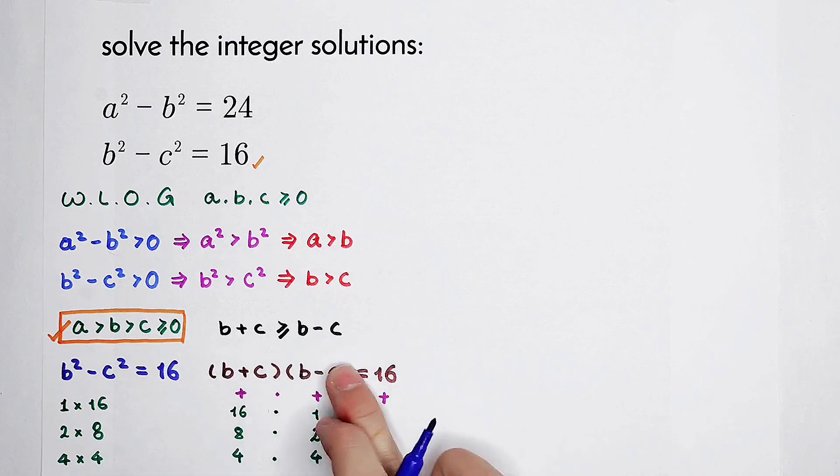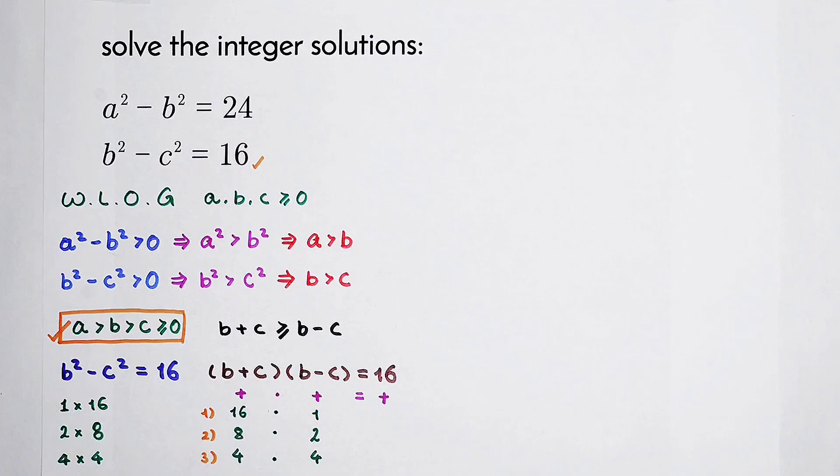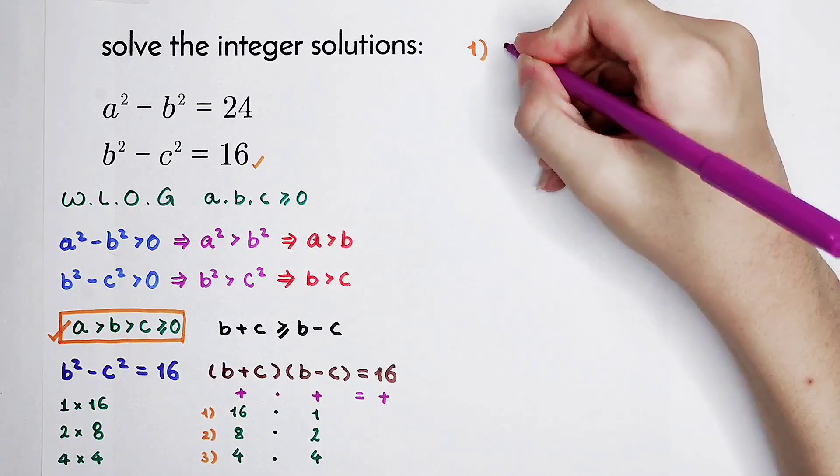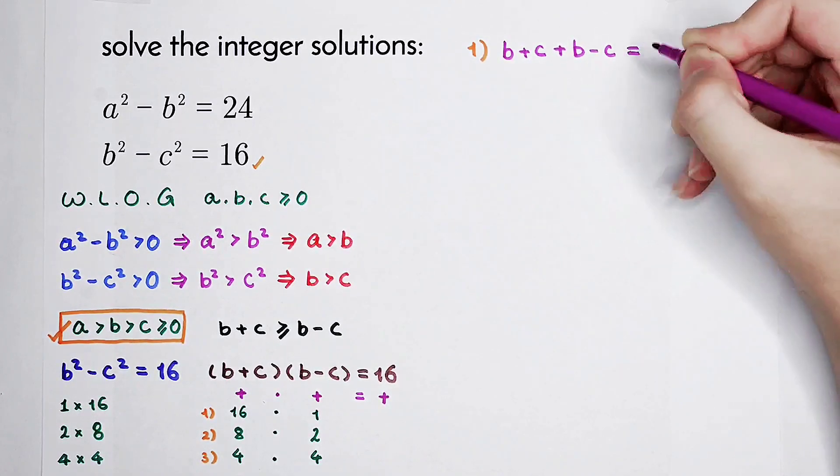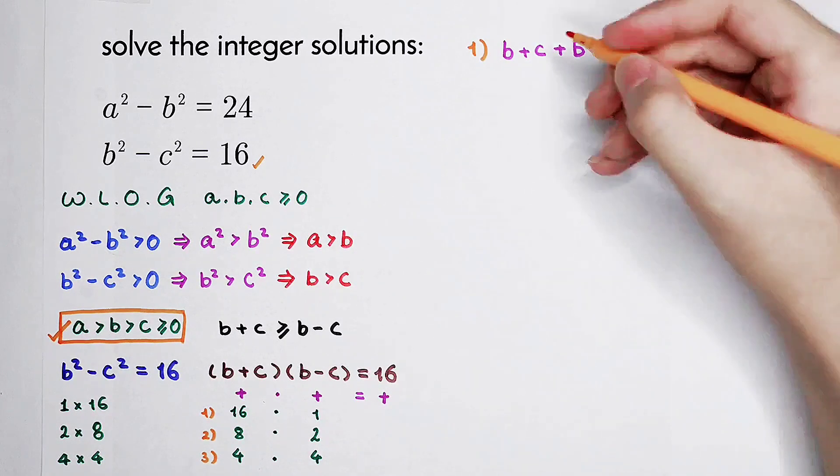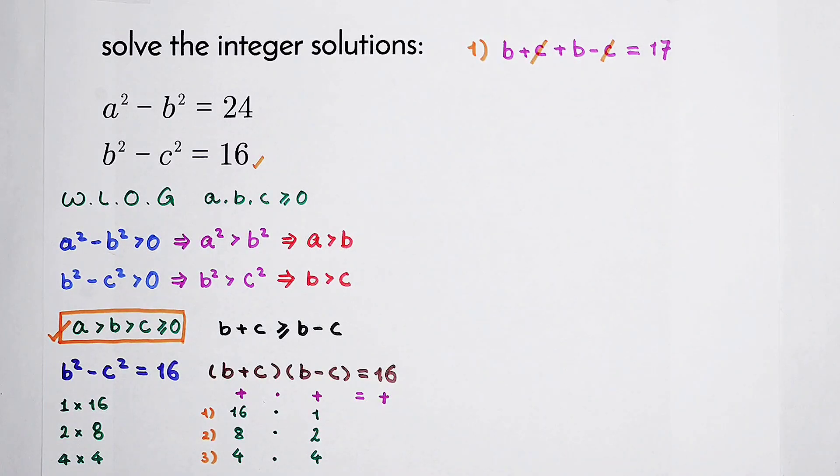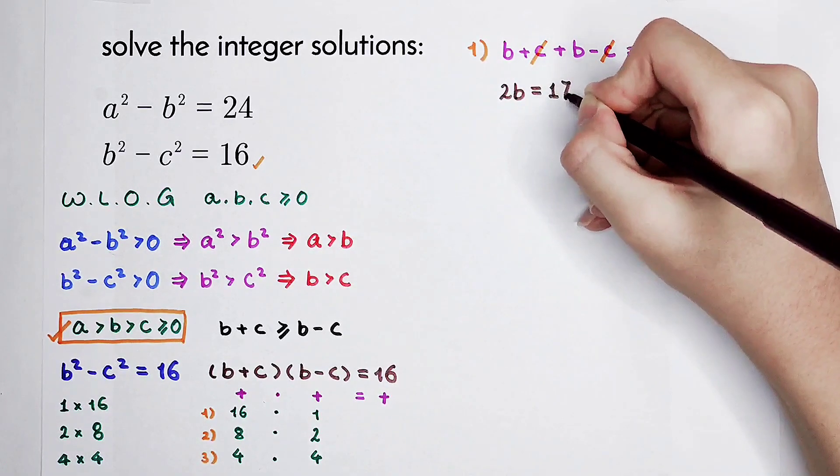Now we have to solve for the value of b and c in each case. For the first case, b plus c plus b minus c equals 16 plus 1 equals 17. C minus c cancel, so 2b equals 17.